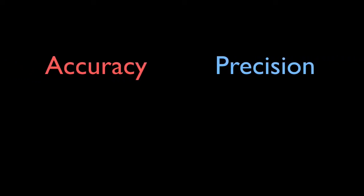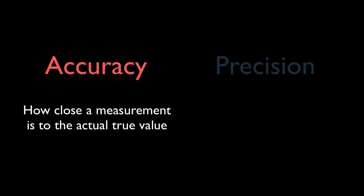Here are two important terms: accuracy and precision. Accuracy is how close a measurement is to the actual true value.